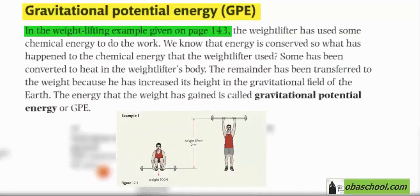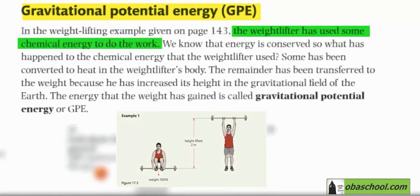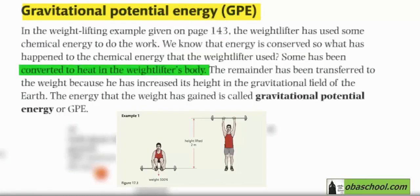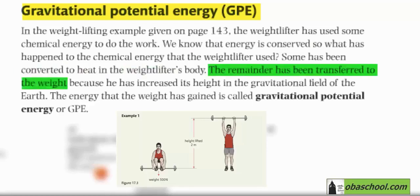In the weightlifting example given on page 143, the weightlifter has used some chemical energy to do the work. We know that energy is conserved, and that is related to the exercise that we're talking about right now. So it is converted to heat in the weightlifter's body. The remainder has been transferred to the weight,